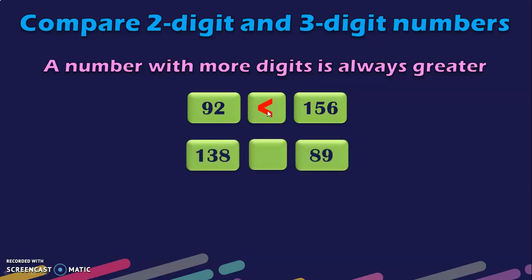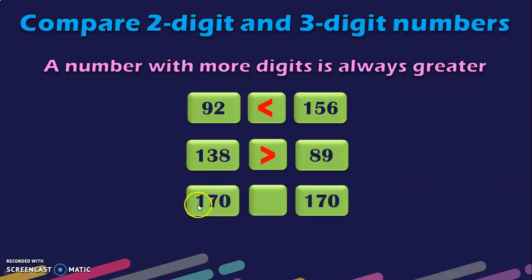Next question: 138 and 89. This is a 3-digit number and this is a 2-digit number, so we know that 138 is greater than 89. Next we have two 3-digit numbers: 170 and 170. When you see the same number on either side, you use the symbol equal to.